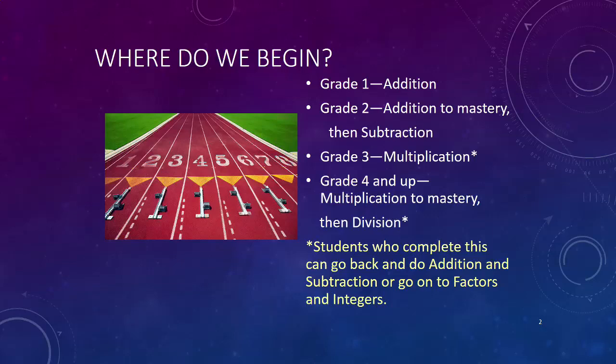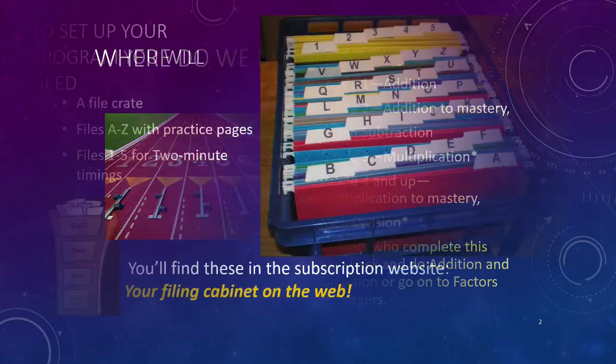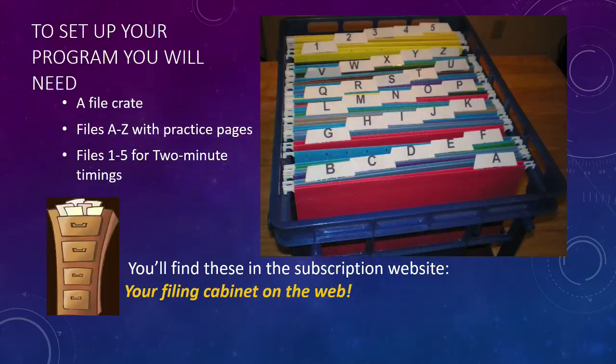Once you've chosen which operation to begin with, you can start setting up the program. To set up your program, you will need to get a file crate and 34 hanging files. Create files A to Z and fill them with about 25 to 30 copies of each practice page. Then create five more files numbered one through five and fill them with class sets of the two minute timings. You can print these out from the subscription website, which serves as your filing cabinet on the web.